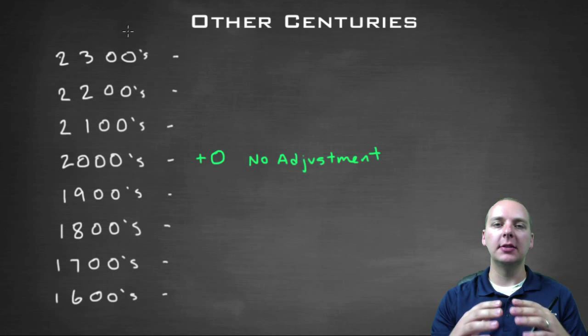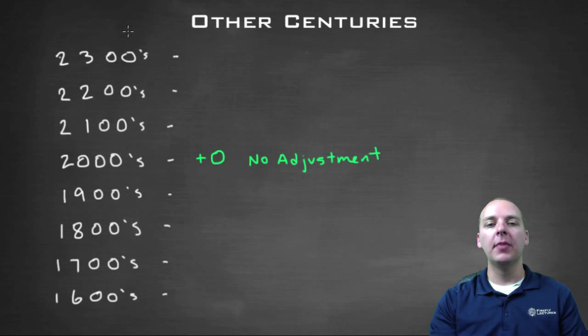So we're going to consider the 2000s as like our home base. We don't need to have any adjustment if your year is already in the 2000s. If it's before or after the 2000s, there's going to be a slight adjustment that you're going to make with your final answer. Okay, so let me put those adjustments up here.